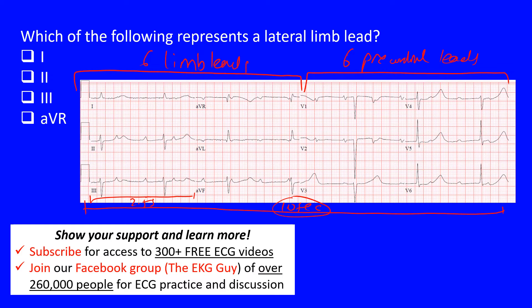The question asks which one is the lateral limb lead, which tells us the answer must be one of the six limb leads. What's not so helpful is that all the choices — lead one, lead two, lead three, and lead AVR — are actually limb leads. So we need to know which ones are the lateral ones.